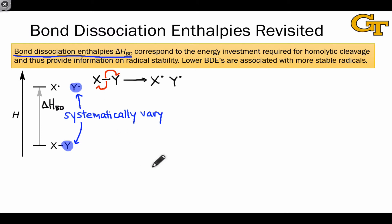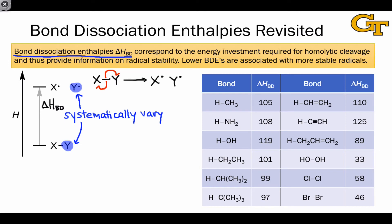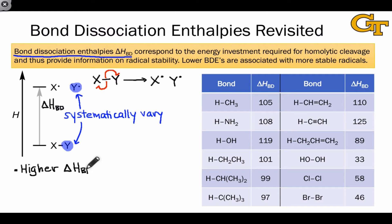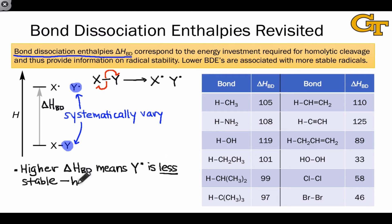Here's a table of bond dissociation enthalpies for a series of bonds. In the first section, we've kept H constant through most of these and just varied the fragment to which H is attached. One thing to appreciate is that higher bond dissociation enthalpies — a greater investment of energy required to break a bond homolytically — means the radical we're systematically varying is less stable. Using these ideas, we can see the stability trends we've discussed in these numbers. Let's compare the carbon radicals on the left-hand side of the table.